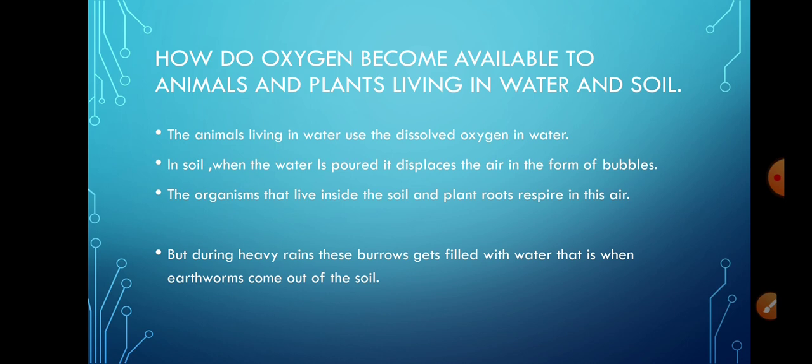The land animals, they can survive on the oxygen present in air. Now, what about the animals or the plants that live in soil and in water? How is the oxygen made available to these? The animals living in water, they use the dissolved oxygen in water. In soil also, when the water is poured, you must have seen whenever you water the plants, sometimes the bubbling you must have observed. It also signifies that the soil also consists of air. So the organisms which live in water and soil, they respire in this way.